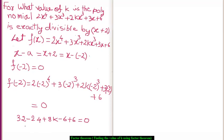So, this gives us 8k plus 8 equals 0. Now, that gives us 8k equals minus 8. That gives us k equals minus 1.